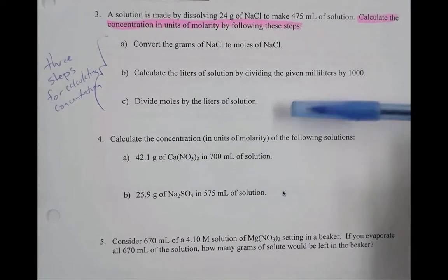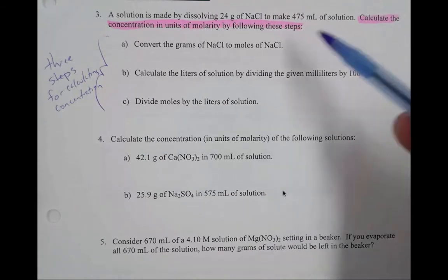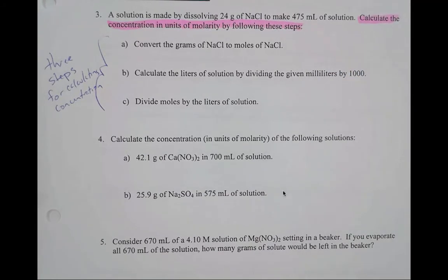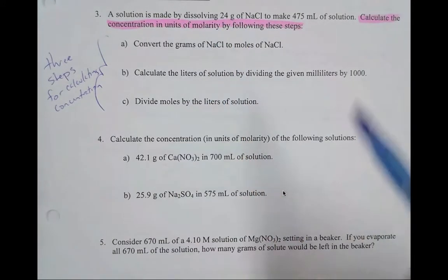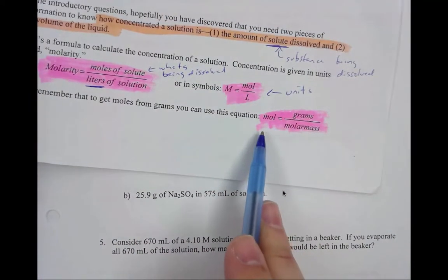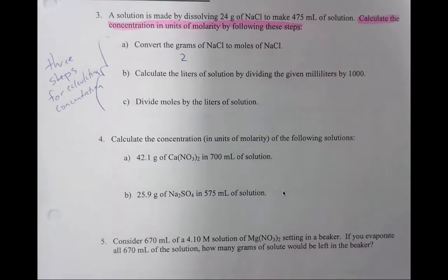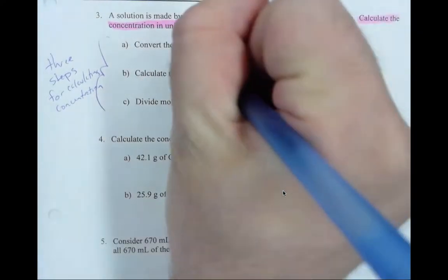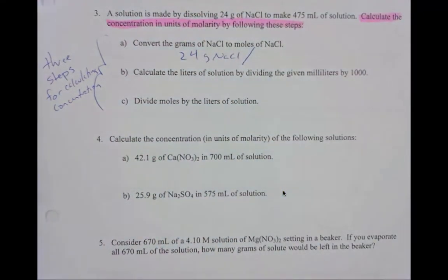So when you look at A, B, and C, A, B, and C are kind of like your three steps for calculating concentration. The first thing is to convert your grams to moles. So we know we're starting with 24 grams of NaCl, so we can just simply divide. Remember guys, I told you that to calculate moles, all we have to do is moles equal grams divided by molar mass. So that's what you're going to see me do here. I'm going to take my 24 grams of NaCl and I'm going to divide by the molar mass.